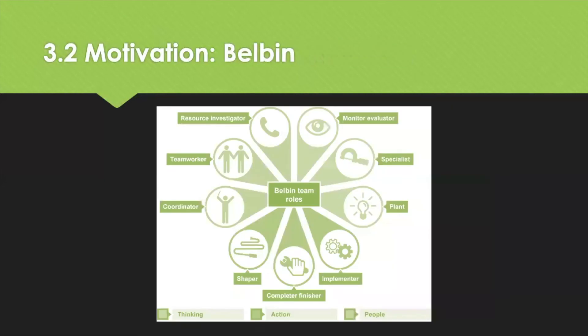In the 1970s, Meredith Belbin identified nine team roles that high-performing teams need to assess: the resource investigator, the team worker, coordinator, the plant, monitor evaluator, specialist, implementer and completer finisher. Not every team needs nine members or all nine skill sets, but each team member is likely to have a primary and secondary skill set within the role definition, and so can meet team needs by playing two roles.